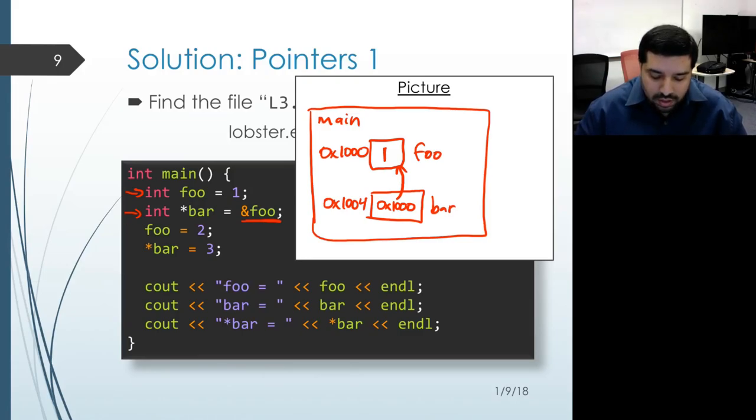Now on the next line, we assign the value 2 to the object associated with foo. So that means that instead of 1 being inside of that memory location, the value gets changed to the value 2.